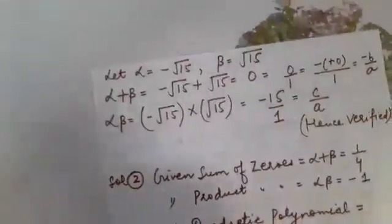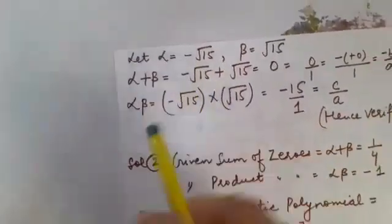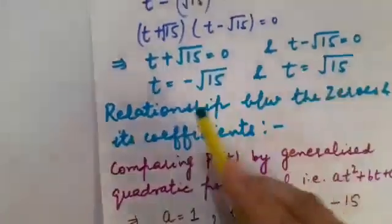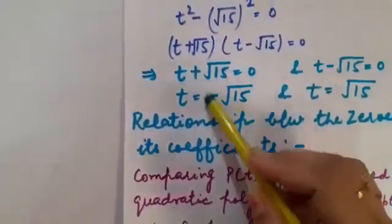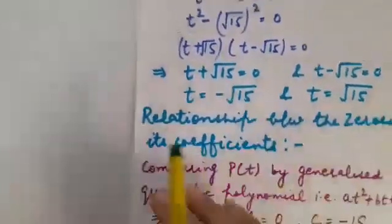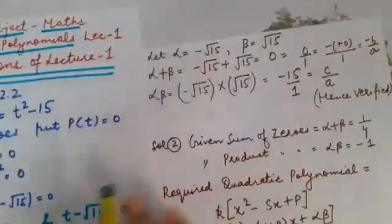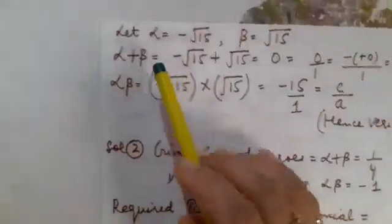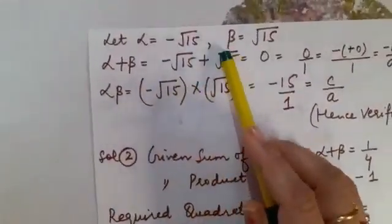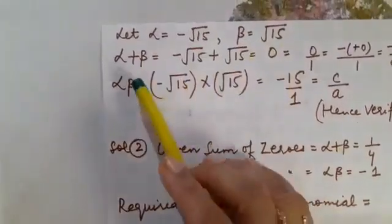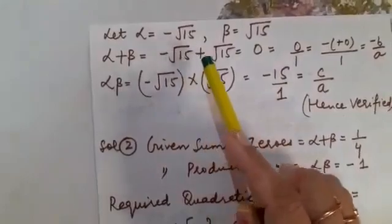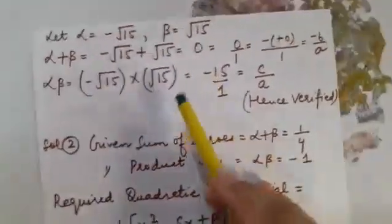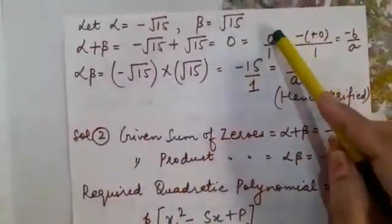Now what I am going to do let the first zero be alpha and another zero be beta. Look alpha is equal to minus root 15 and beta is equal to plus root 15. Now we are going to calculate sum of the zeros.